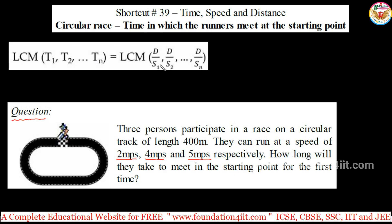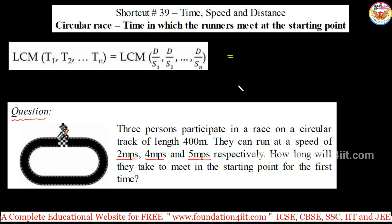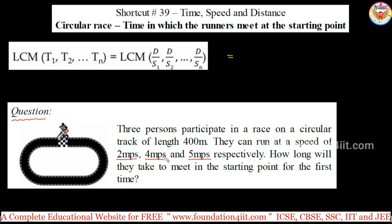Time is equal to distance divided by speed — that is the straight formula. The distance is the same for all, 400 meters, since the total track length is 400 meters. So we need to find the time taken by each person to complete one circle.